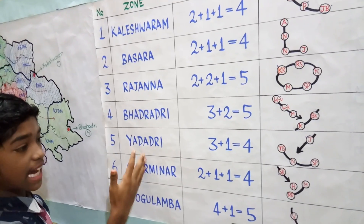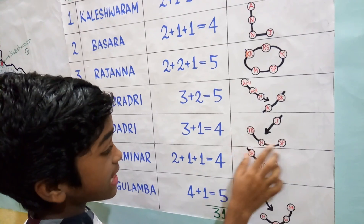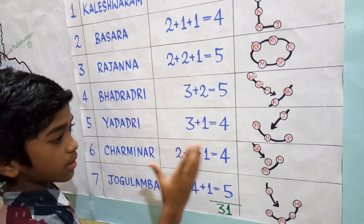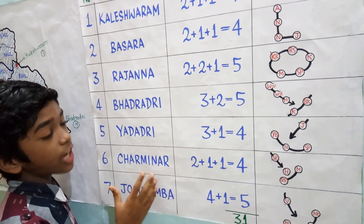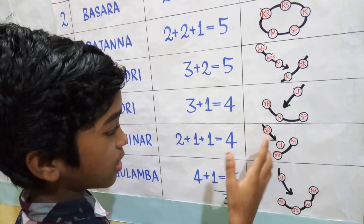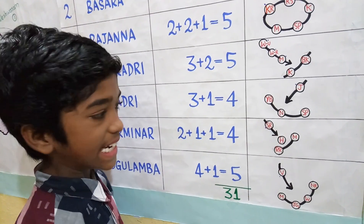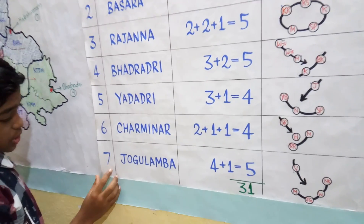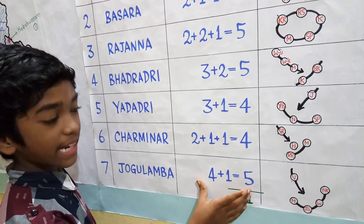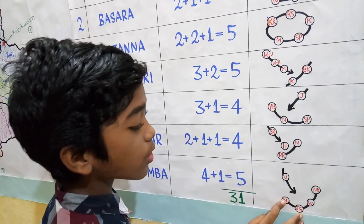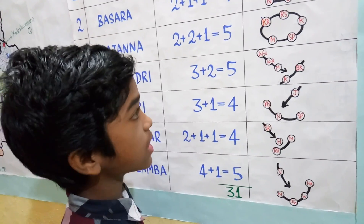Zone number 5, Yadadri, has 4 districts: one is Jangaon and the remaining 3 from old Nalgonda district. Zone number 6, Charminar zone, also has 4 districts: one is Hyderabad, two are from old Rangareddy district, and one is Sangareddy. Zone number 7, Jogulamba zone, has 5 districts: 4 from old Mahabubnagar district and one is Vikarabad district.